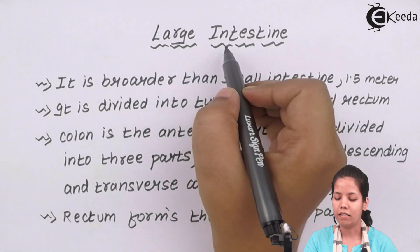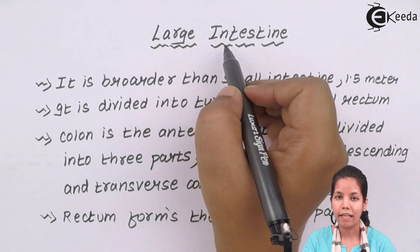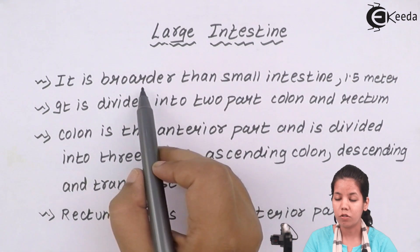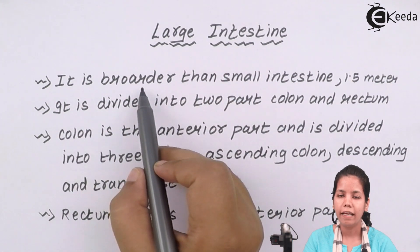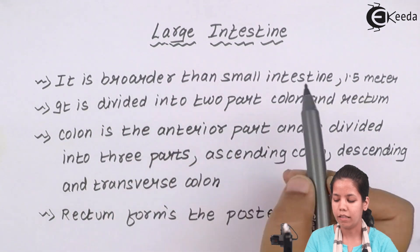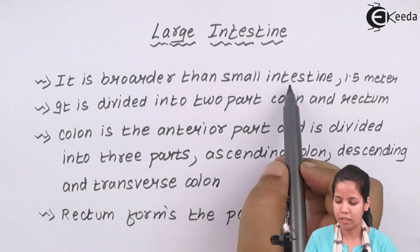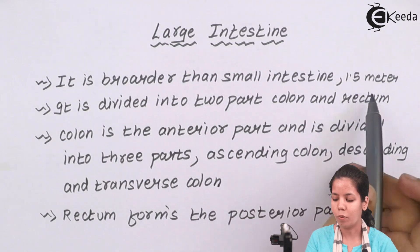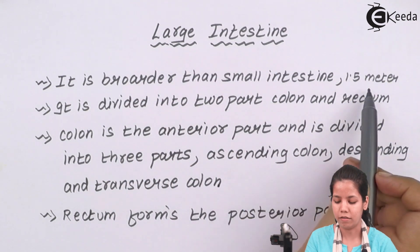The Large Intestine is smaller in length but broader in diameter than the Small Intestine. Approximately, it is 1.5 meters in length.